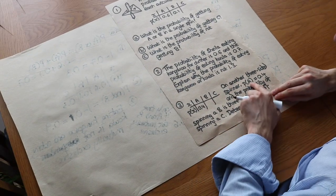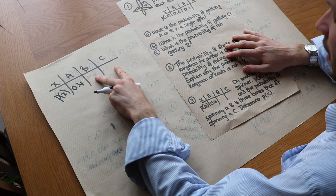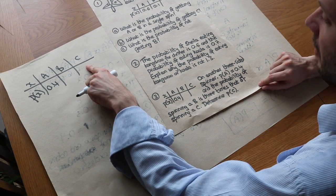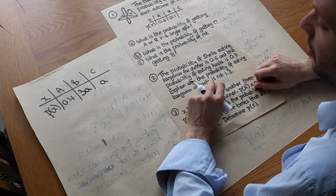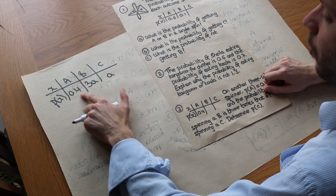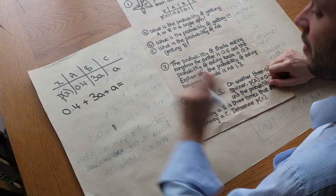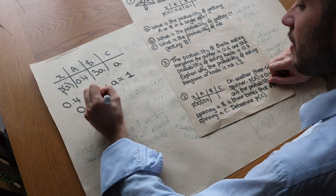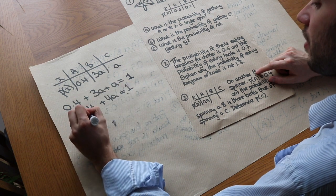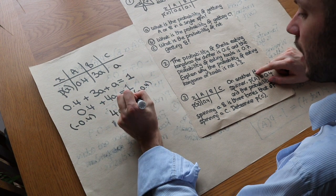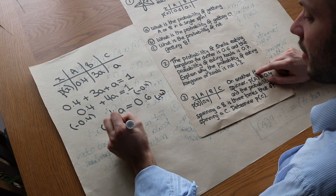Question three: on a three-sided spinner the probability of A is 0.4, and the probability of spinning B is three times that of spinning C. Determine the probability of C. Let the probability of C be a, so the probability of B is 3a. Since all probabilities must add up to 1: 0.4 plus 3a plus a equals 1, which simplifies to 0.4 plus 4a equals 1. Subtracting 0.4 gives 4a equals 0.6, and dividing by 4 gives a equals 0.15.